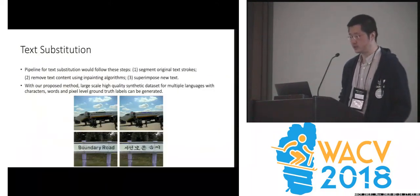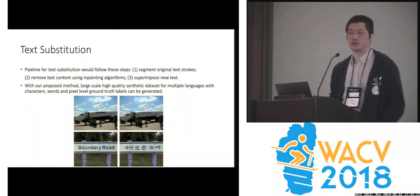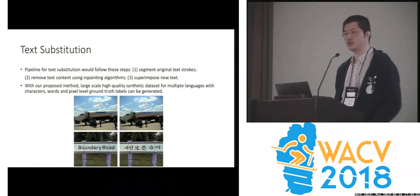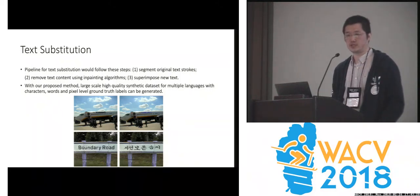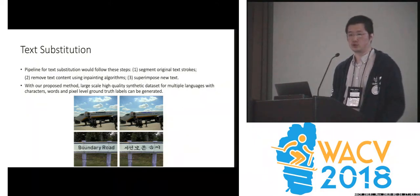In this paper, we also present an interesting idea called text substitution. There are thousands of languages out there, and different languages have different properties. For example, in Chinese there is no space between words. So if you train a text detection or recognition model for English and generalize it to a different language, you might get very poor performance. Unfortunately, it is not feasible to label a large-scale dataset for every different language.